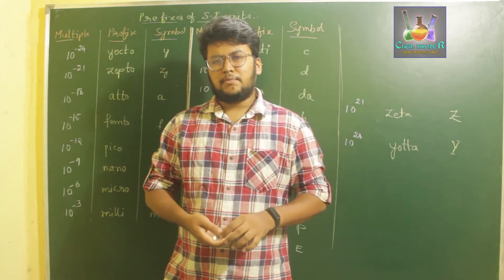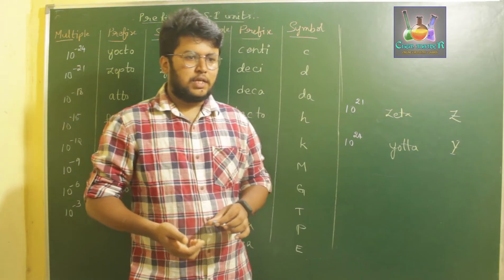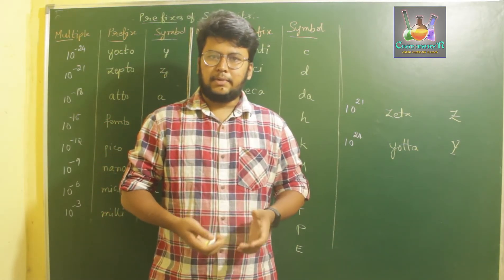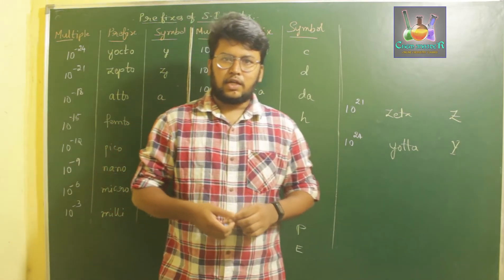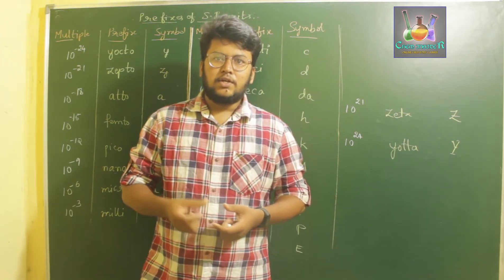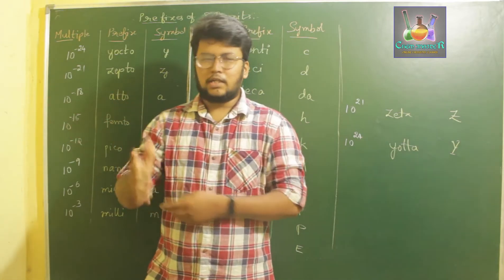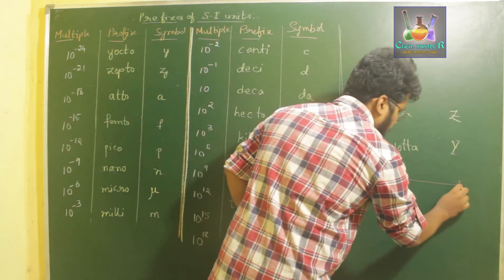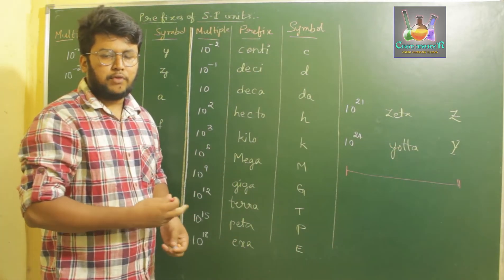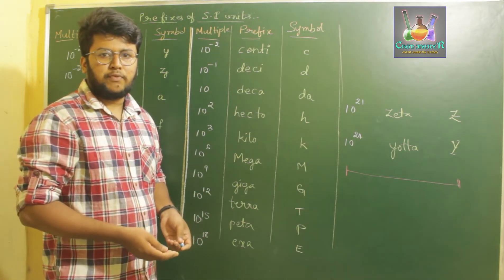In this chapter we are going to discuss about the topic of prefixes involved in our SI units. Usually when we take an SI unit, let us say a meter for distance, that meter might have a kilometer, megameter, or centimeter variation. We cannot always use one meter for everything, so what we do is reduce or increase those meters by using specific prefixes.